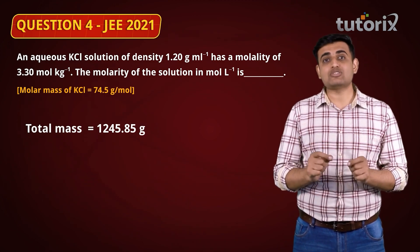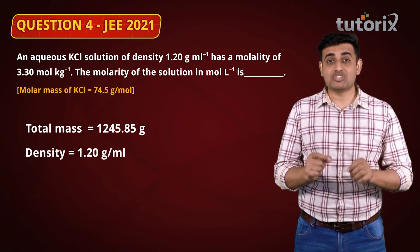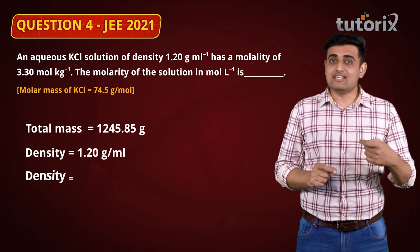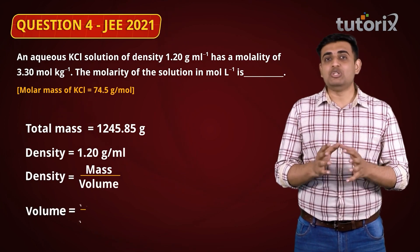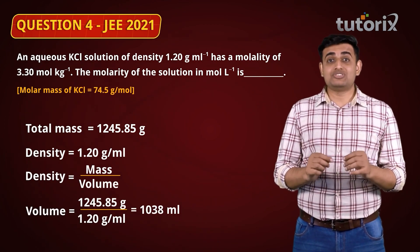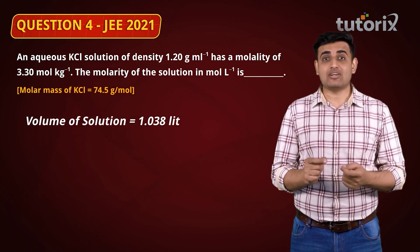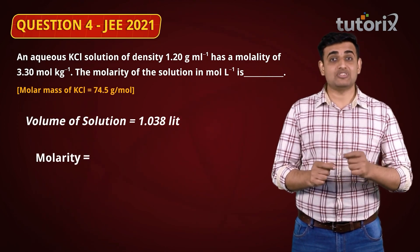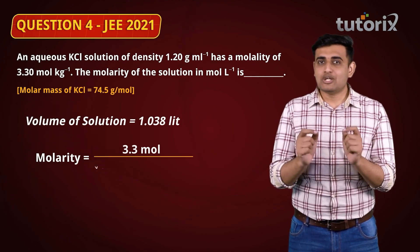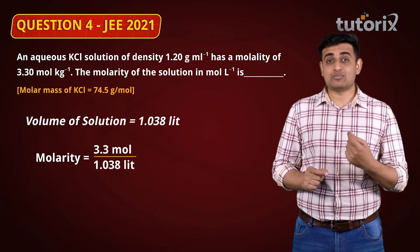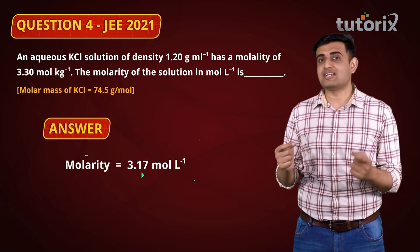Since the density is 1.20 g/mL and density = mass / volume, we can calculate the total volume of the solution: volume = 1245.85 / 1.20 = 1038 mL or 1.038 litres. Now molarity = moles of solute / volume of solution = 3.3 moles / 1.038 litres = 3.17 M. The correct answer is 3.17.